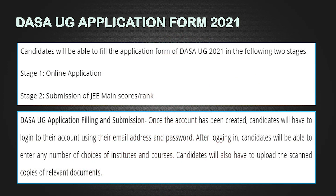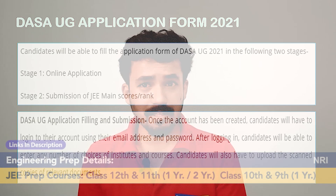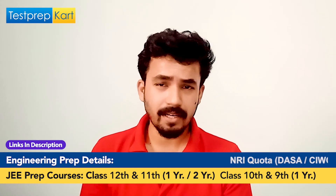The second step is submission of your JEE Mains scorecard. Once the account has been created, candidates will log into their login accounts using their email ID and password. After logging in, candidates will be able to enter any number of choices of institutes and courses, which feeds into the seat allotment process. You will also need to upload all scanned copies of relevant documents.